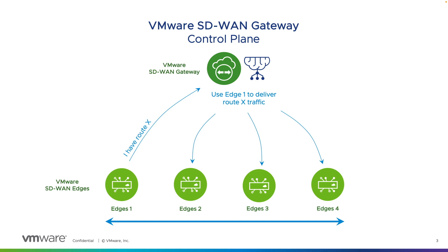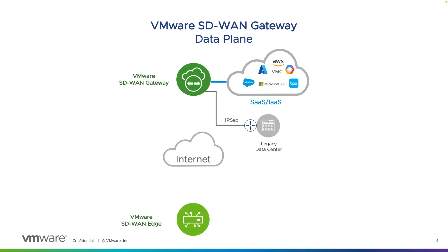A second and optional function of the gateway is to serve on the data plane, which means customer data traffic can pass through the gateway. This enables one of VMware SD-WAN's major differentiators. The overlay tunnels created between edges and gateways provide the same DMPO optimization as you would find between two SD-WAN peers.